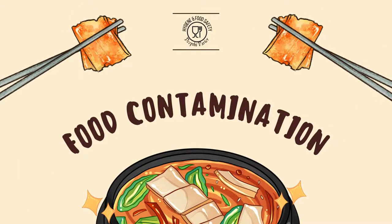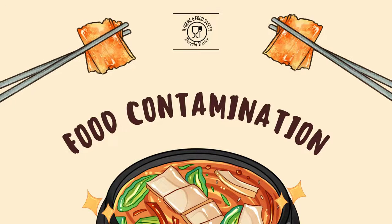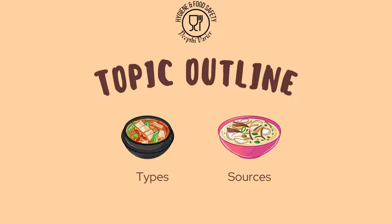Hello all. In this video let's discuss about food contamination. Food contamination is the presence of unwanted materials in food which can harm public health. The material present in food which makes food unfit for consumption is called a food contaminant — an unwanted substance that should not be present in food. In this video we will talk about the types of food contaminants, and in the next one we will discuss the sources of food contamination.